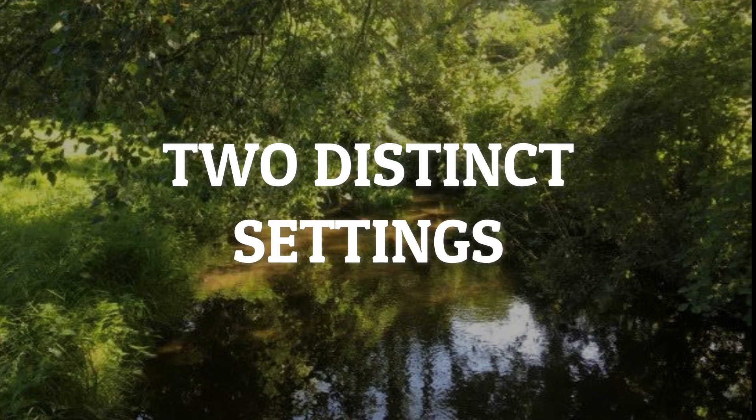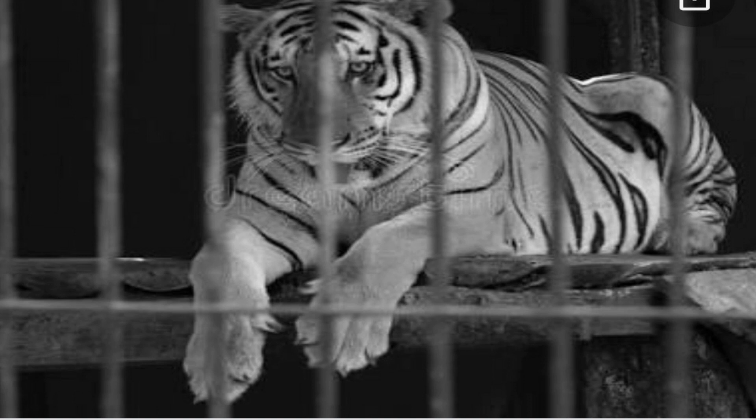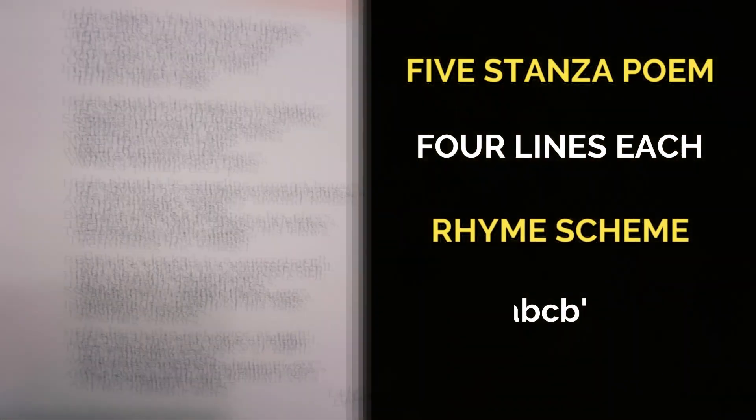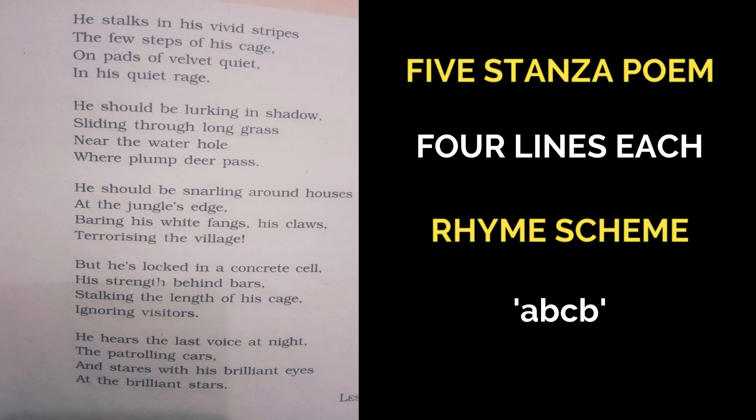The poem has two distinct settings. The first setting is of the zoo, where the tiger is kept in a cage, and the poet tries to explain the agony and helplessness of a caged tiger. The second setting is the natural wild habitat of the tiger, where it actually belongs. The poem comprises five stanzas, each consisting of four lines, and the rhyme scheme followed in all stanzas is ABCB.